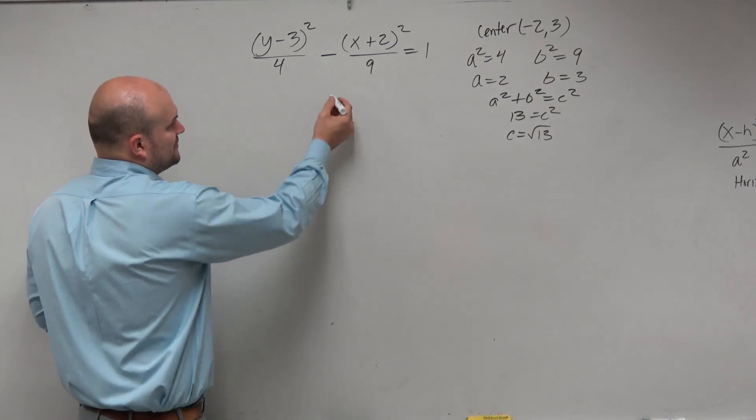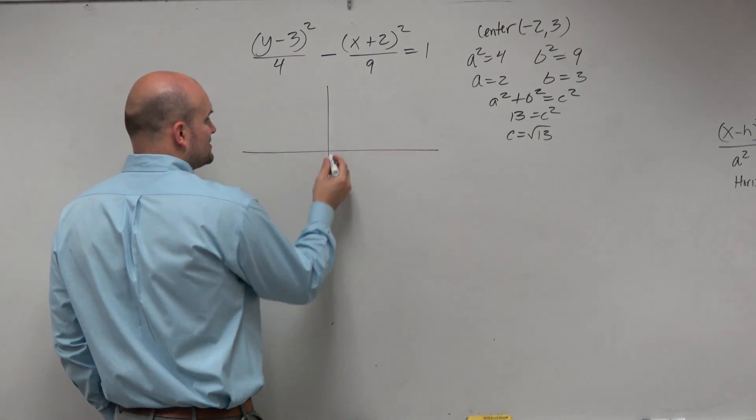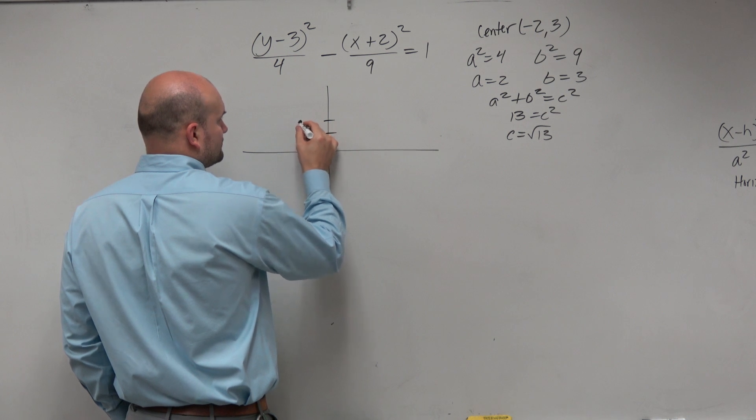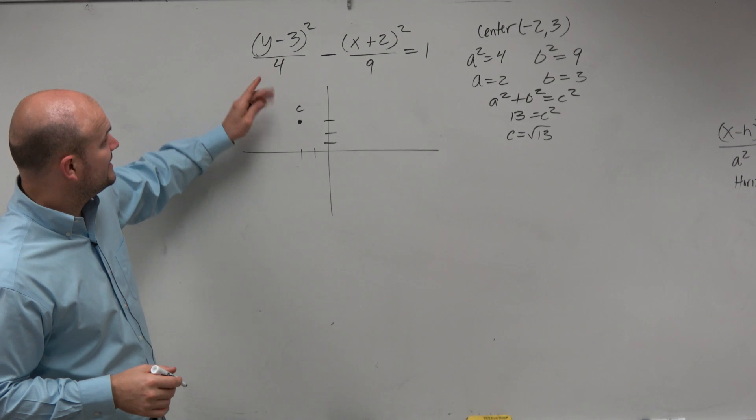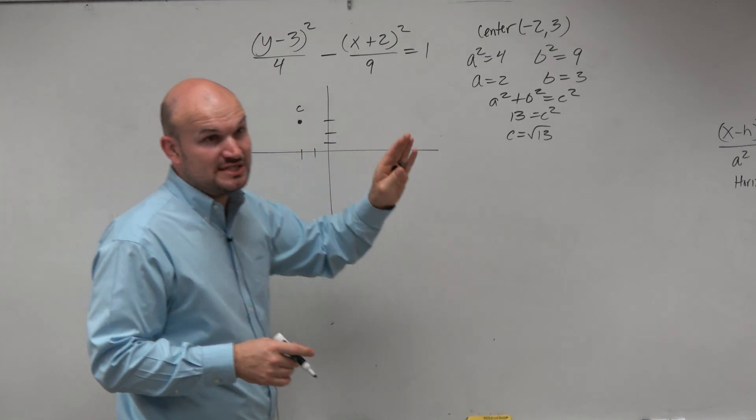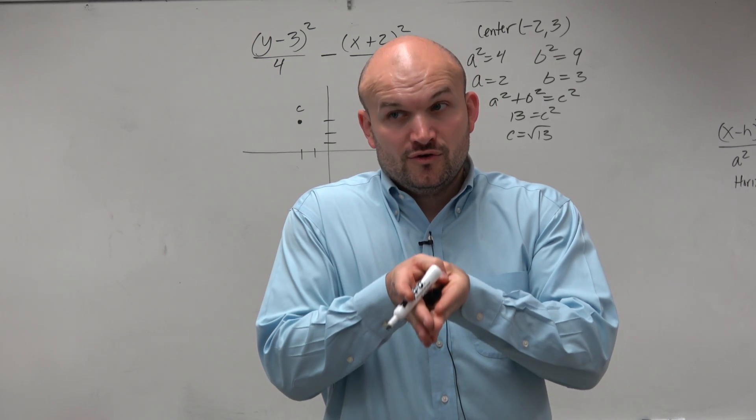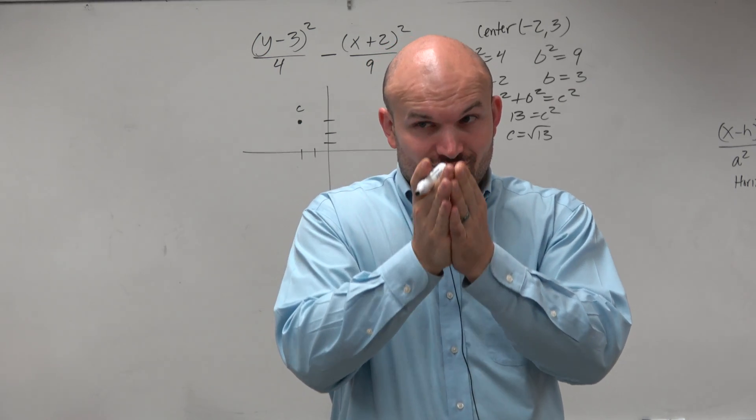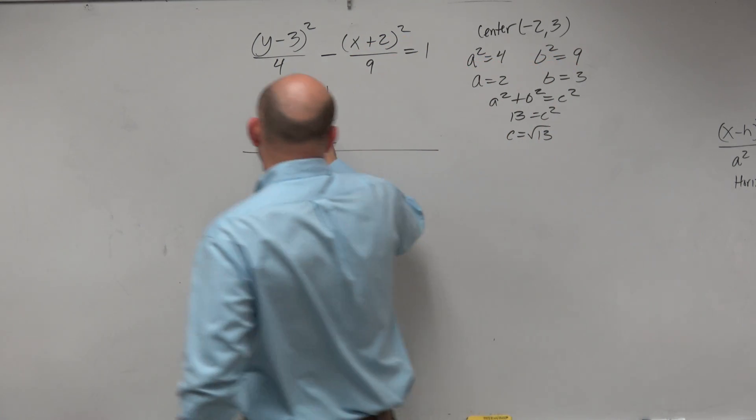So our center's at negative 2, 3. So let's go ahead and graph that. So in this case, our center's at negative 2. One, two, three. There's our center. Since our A is under the Y, my transverse axis, where my vertices and my foci lie are now going to be vertical. Make sure because A squared's under your Y, now you're going to have vertical.